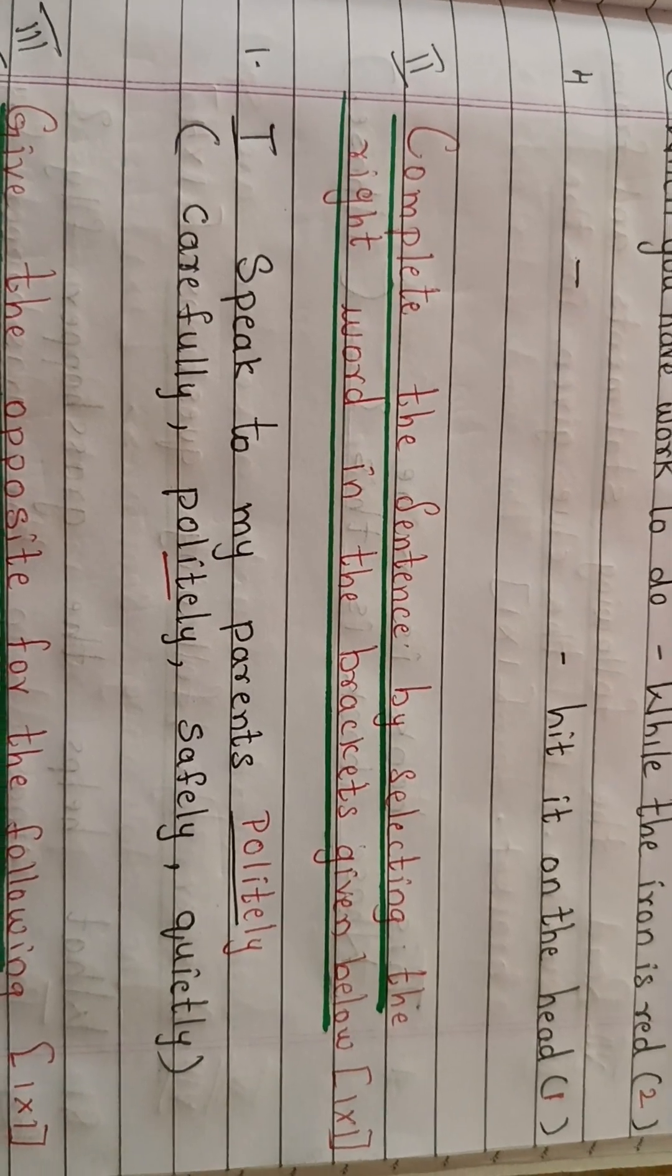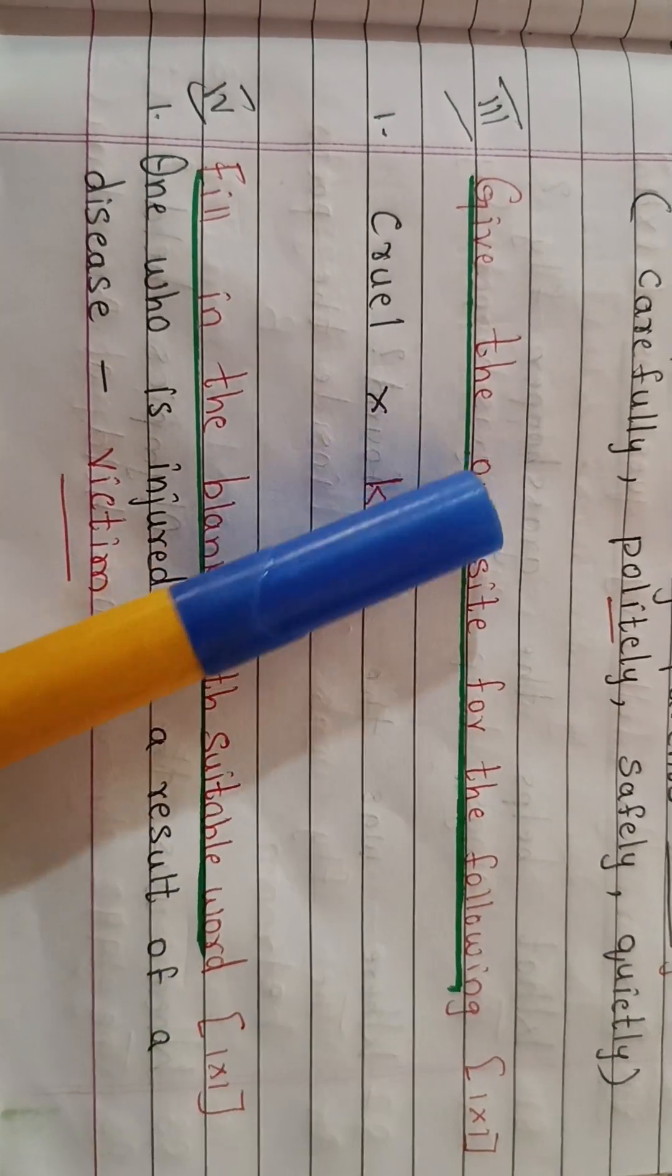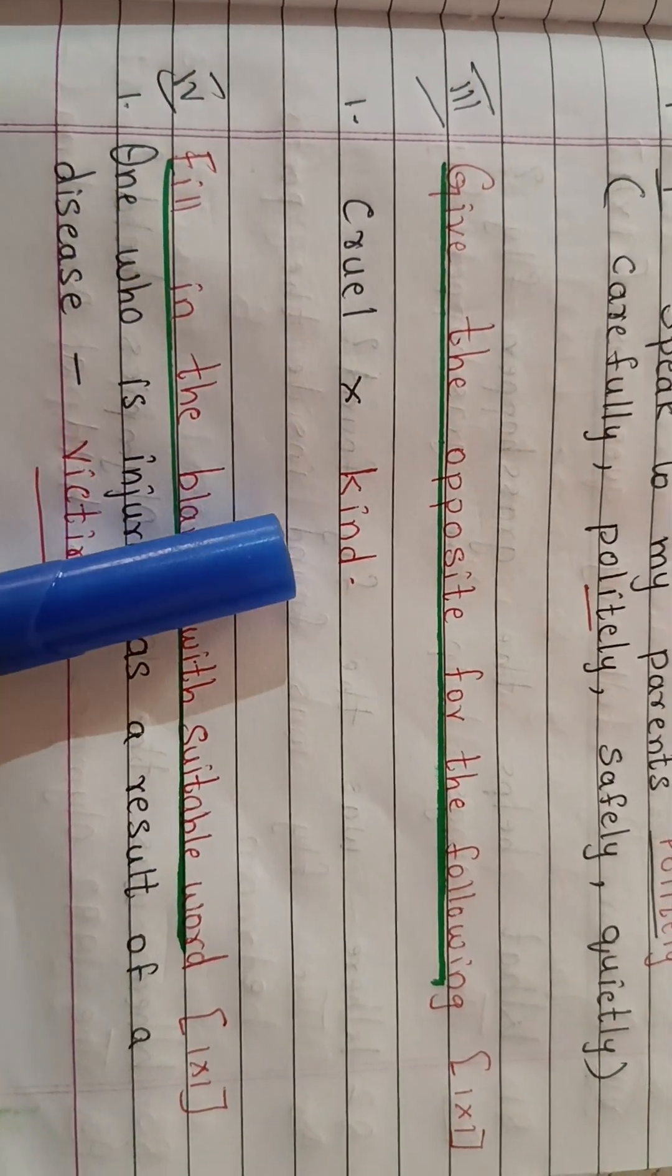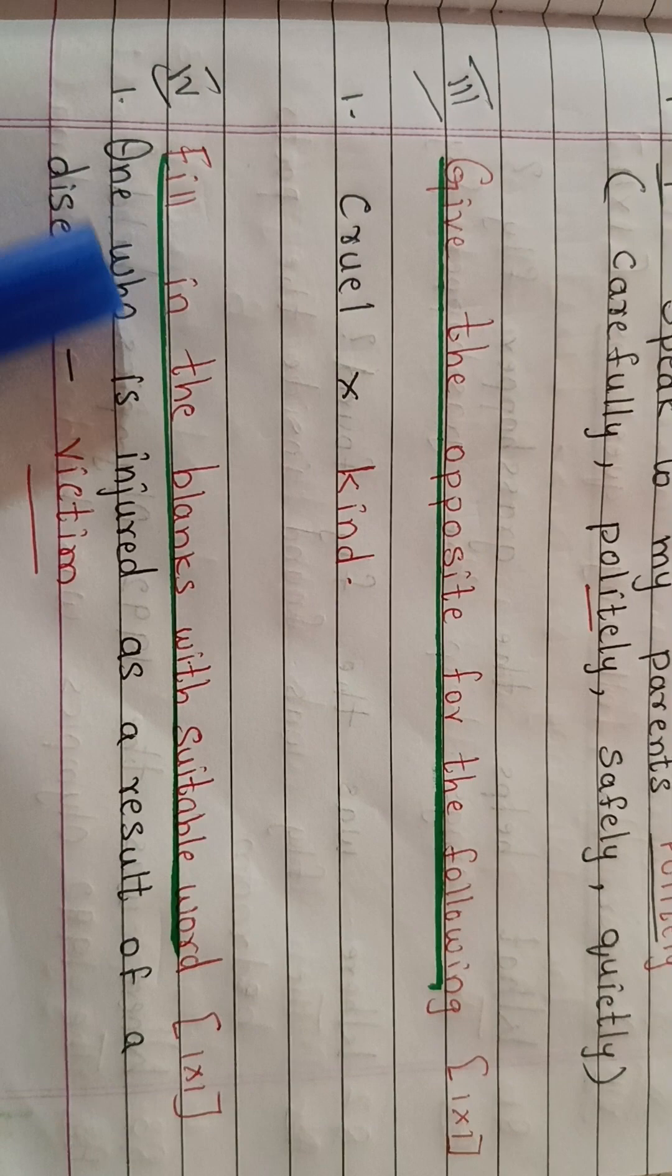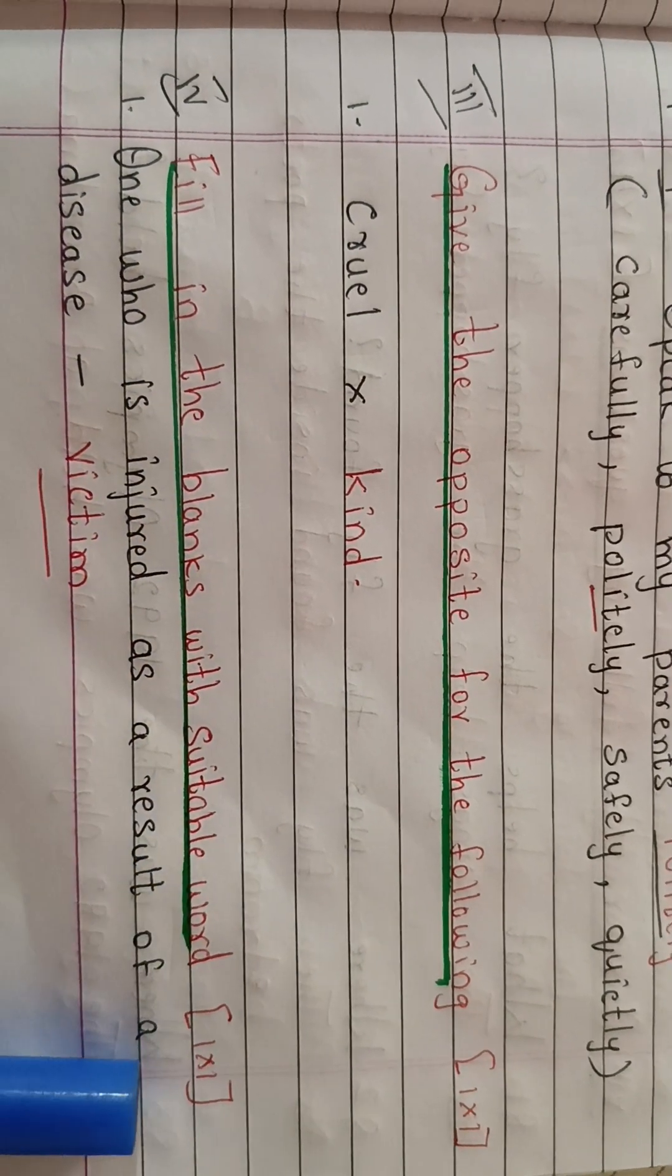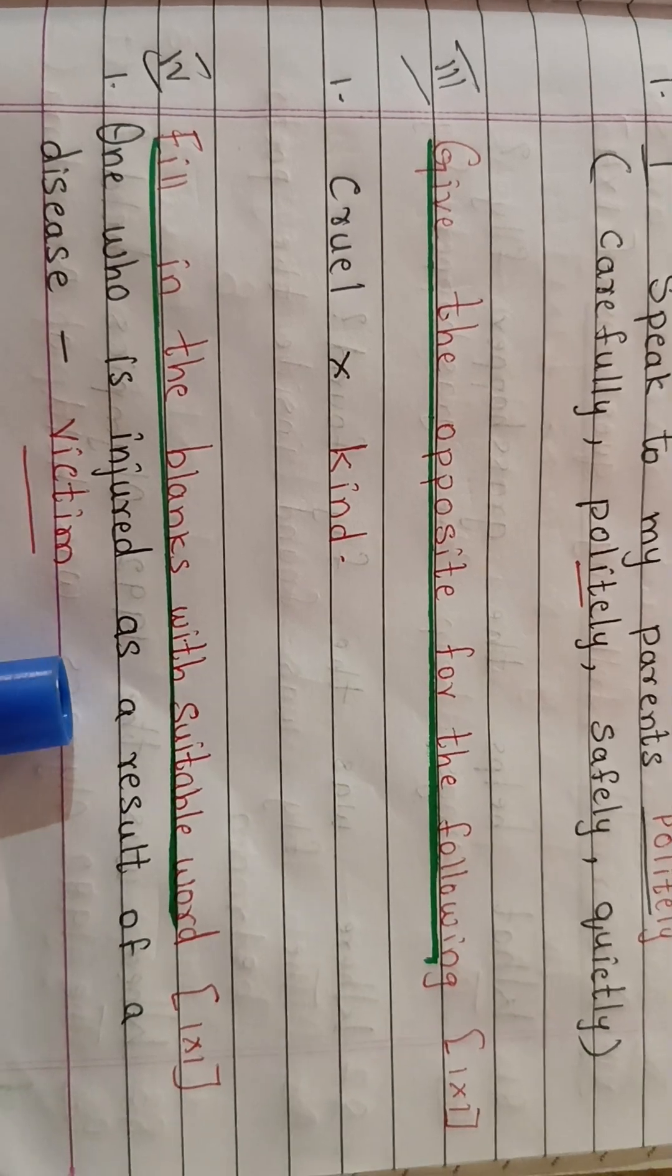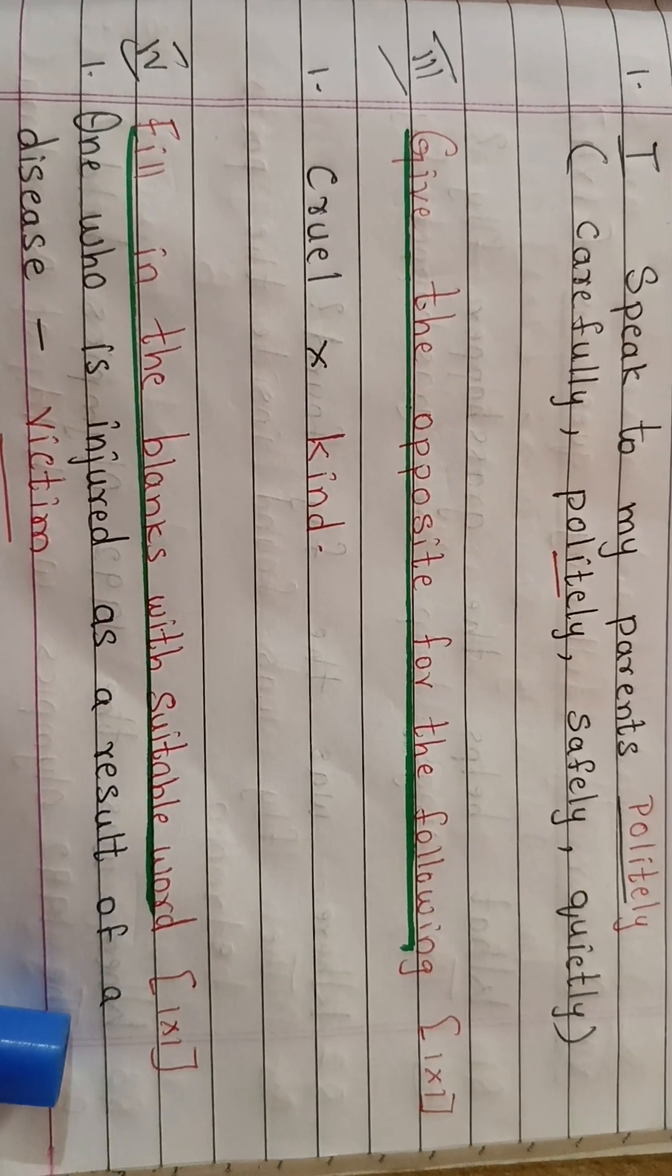Third question: give the opposites for the following. Cruel, opposite is kind. Fill in the blanks with suitable words. So this is the next question. One who is injured as a result of a disease is called dash. He's a victim. So this is for one mark.